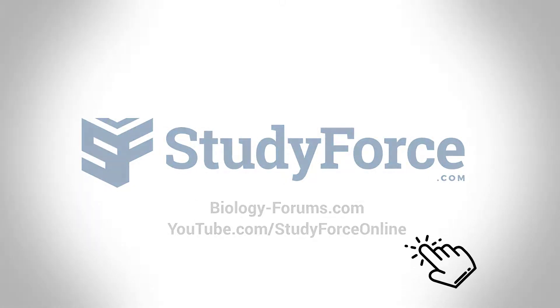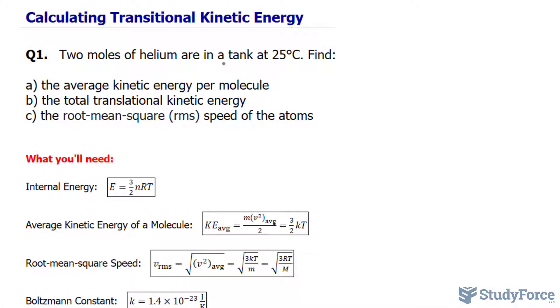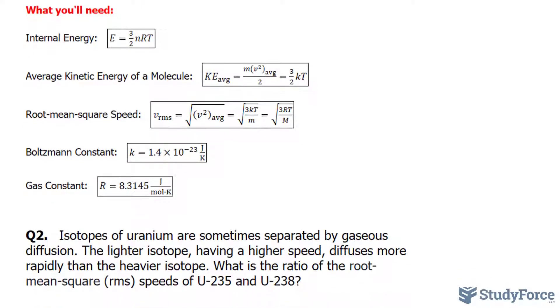In this lesson, I'll show you how to calculate three things: the average kinetic energy, the transitional kinetic energy, and the root mean square. I have two questions prepared, question one and question two.